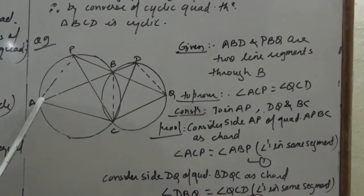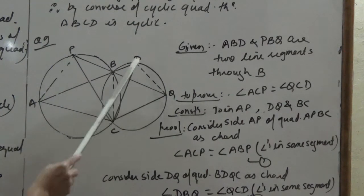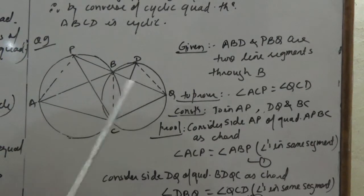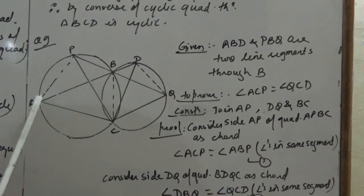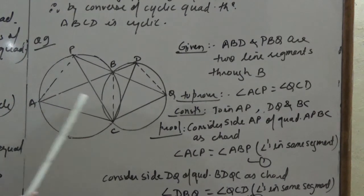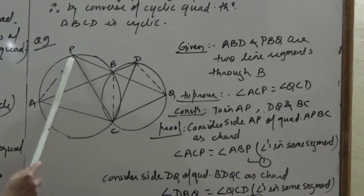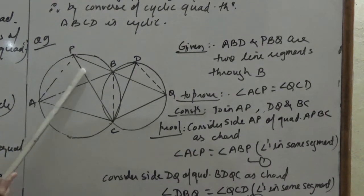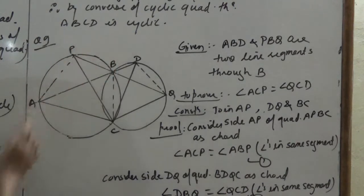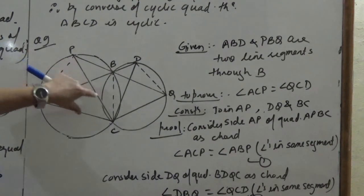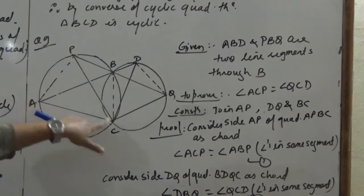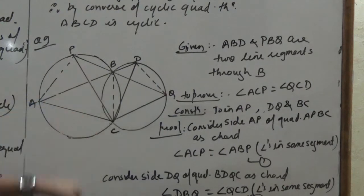For the construction, join AP and DQ. Now APBC forms a cyclic quadrilateral in the larger circle. Consider side AP of cyclic quadrilateral APBC as a chord. By the angles in the same segment theorem, angle ACP equals angle ABP — both subtended by chord AP in the same segment.